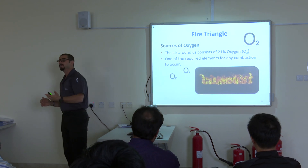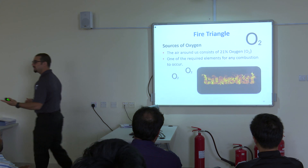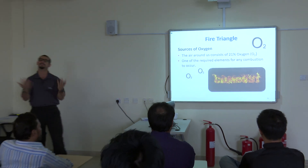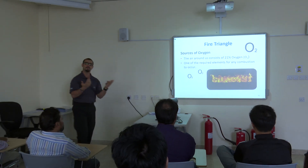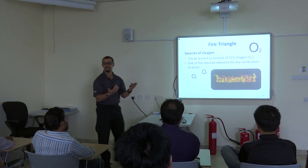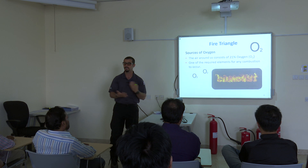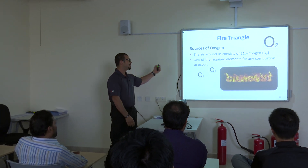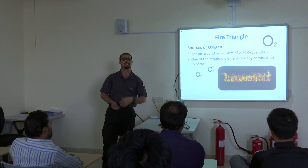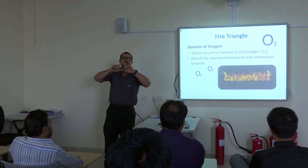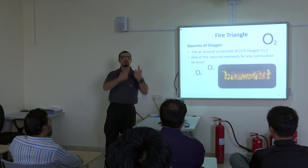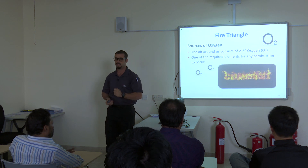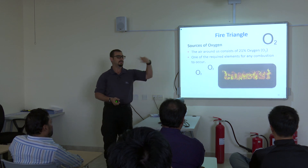Where do we get oxygen? From the atmosphere. We are inside the classroom and we are breathing — that oxygen is here. Clear? So now you understand: if you have these three elements, you will get fire.